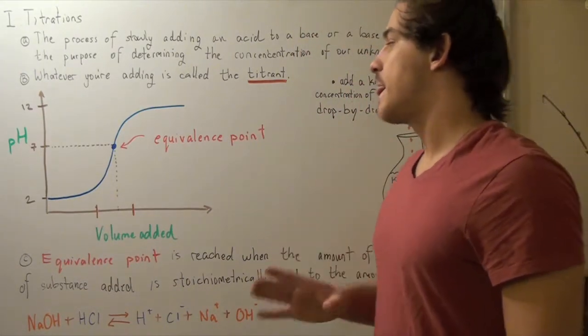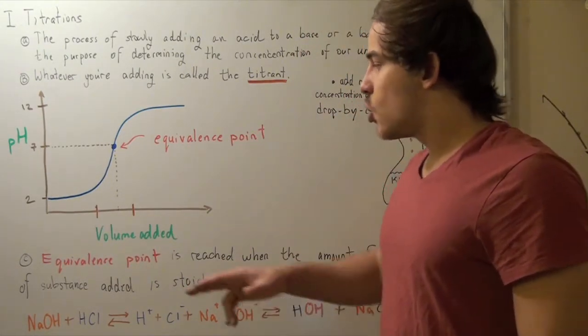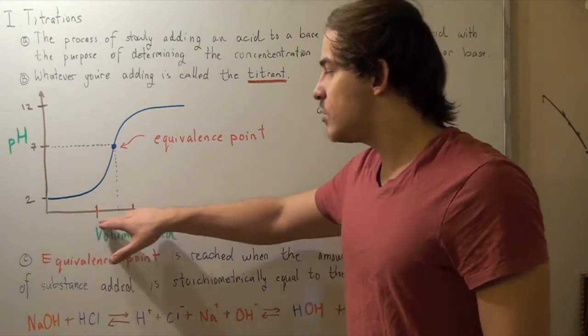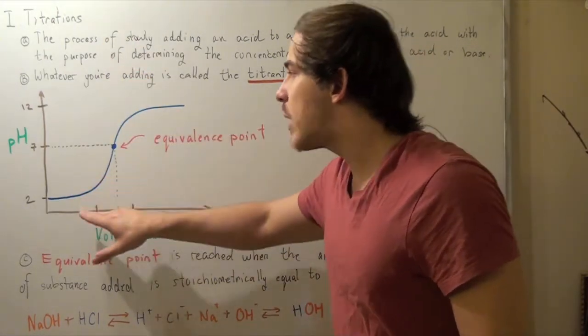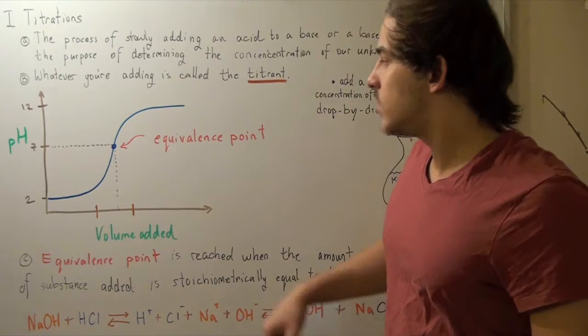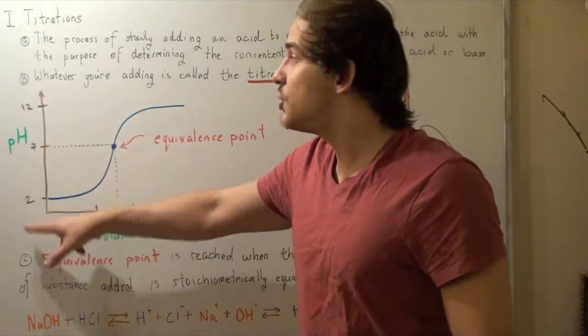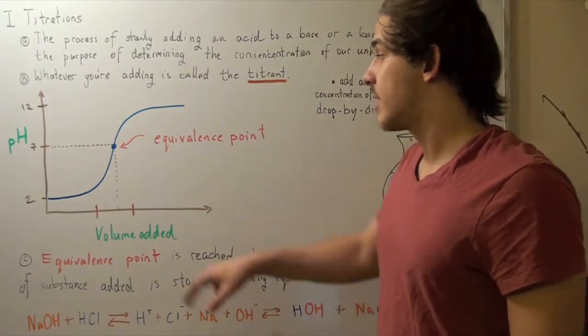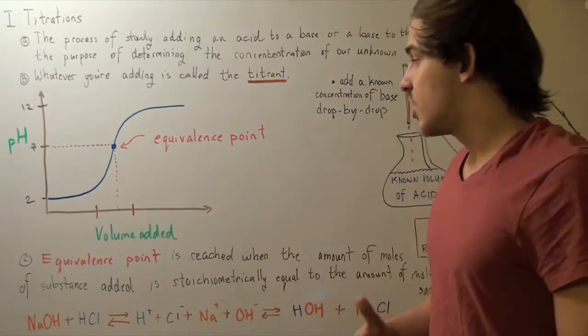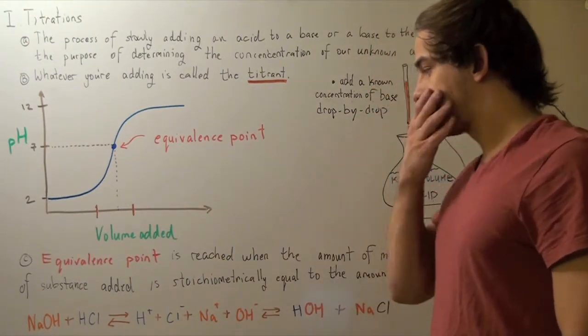But eventually, we come to a point where any more volume added will increase the pH dramatically. We will come to a point where the pH will increase by 10 units. So why is that? Let's see.